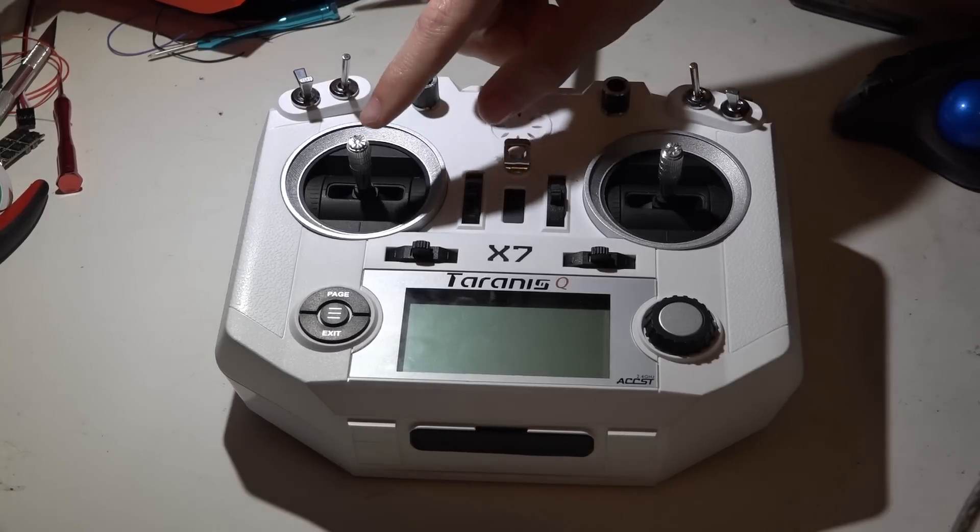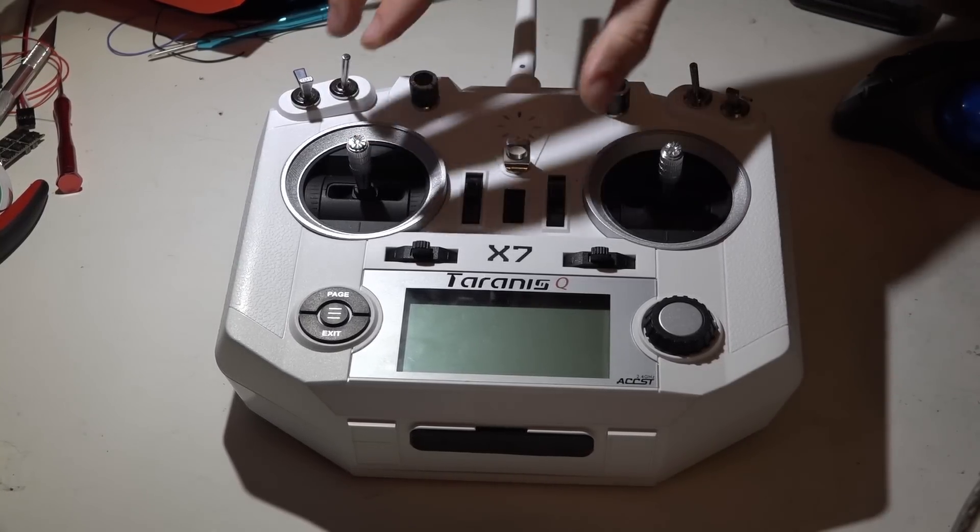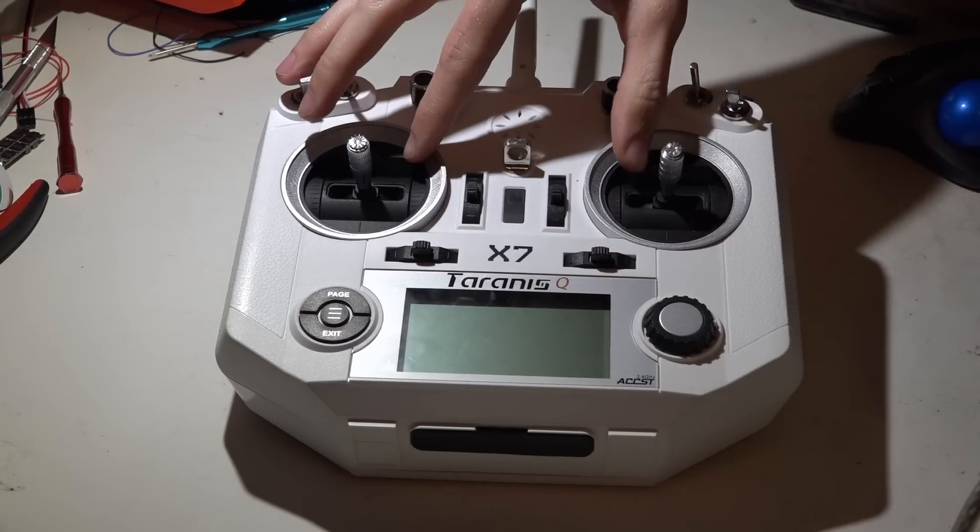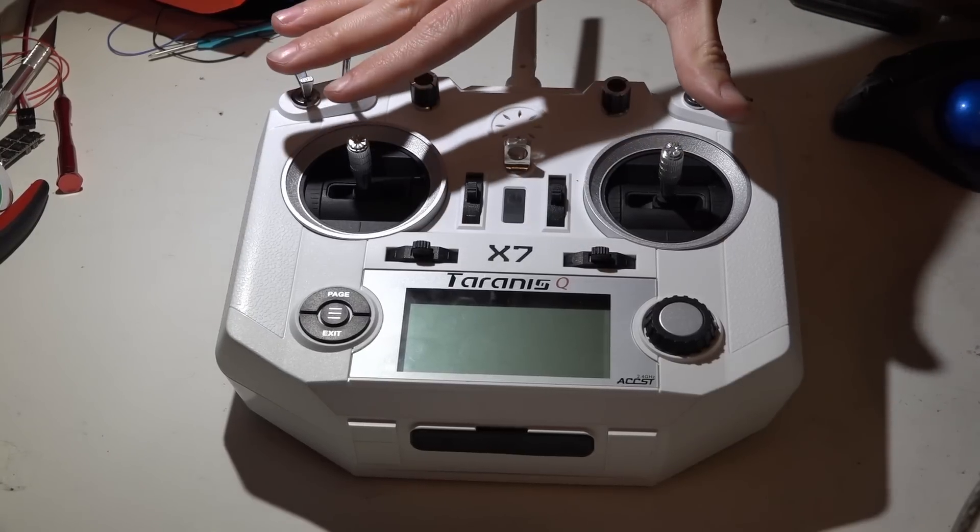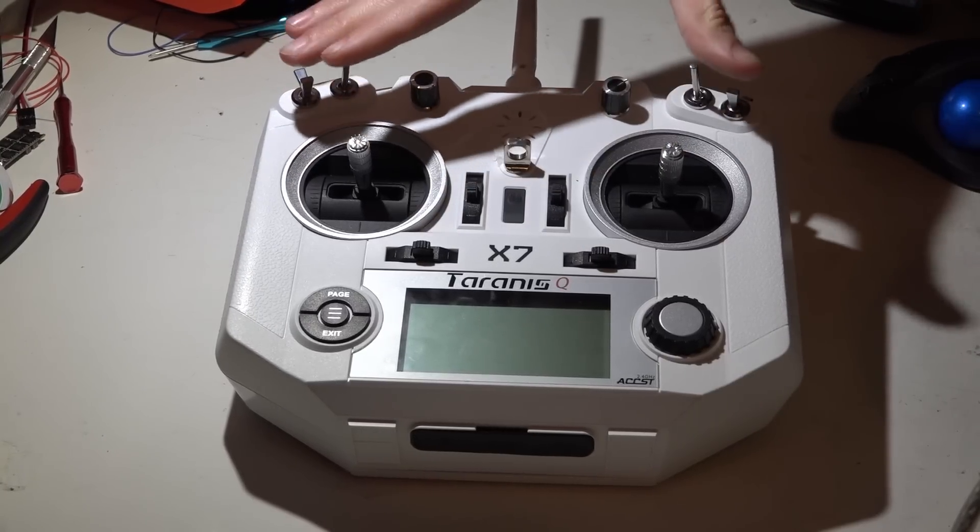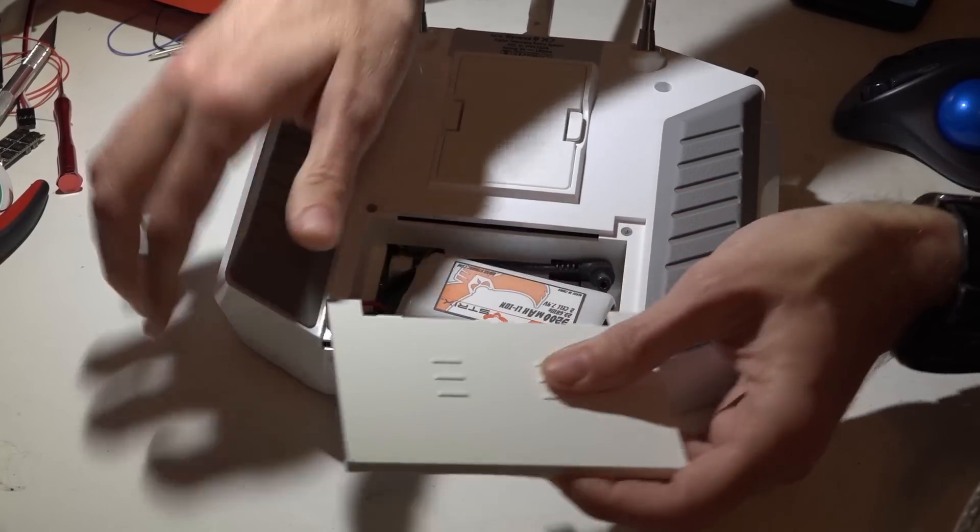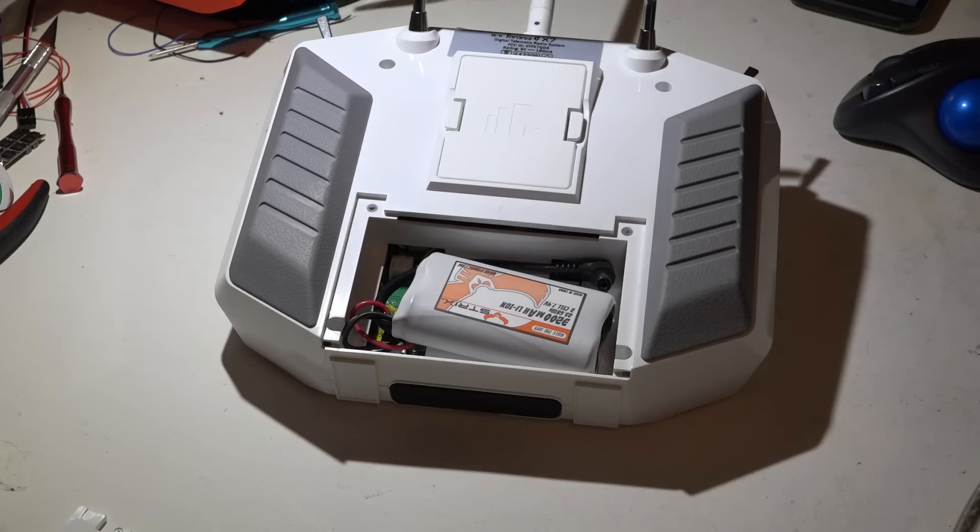Not only will we disable the self-centering for one of the two sticks, but we will also go ahead and set up the sticks, calibrate it to our liking because believe it or not, this may sound silly, sticks set up to your preference will actually increase your flight performance. So let's jump right into it, and this one is actually a lot easier to take apart than the Taranis X9D if you've never taken one of those apart.